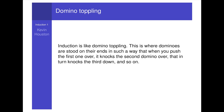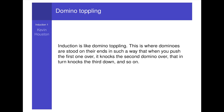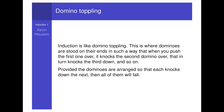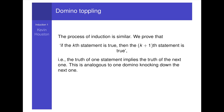Induction is like domino toppling. This is where dominoes are stood on their ends in such a way that when you push the first one over, it knocks the second domino over, that in turn knocks the third down, and so on. Provided the dominoes are arranged so that each knocks down the next, then all of them will fall. We prove that if the kth statement is true then the k+1th statement is also true — the truth of one statement implies the truth of the next one. This is analogous to one domino knocking down the next. So if the first statement is true, then all the statements are true.